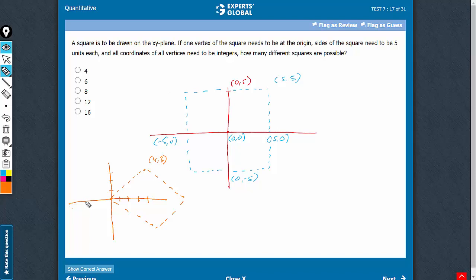One such mirror image on the negative x-axis - the vertex here is going to be at (-4,3). Similarly, one square is possible on this side with the vertex at (-4,-3). So overall, these four squares are possible.